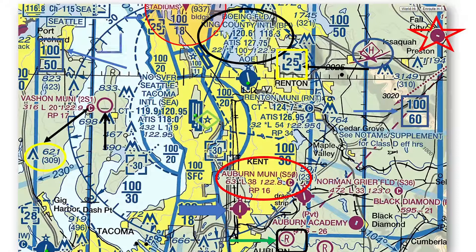The orange circle in the top of the chart just to the north-northwest of Boeing Field indicates ATFR, which is an abbreviation for temporary flight restriction. Temporary flight restrictions are typically issued during sporting events or other events where there are large crowds in a confined area.